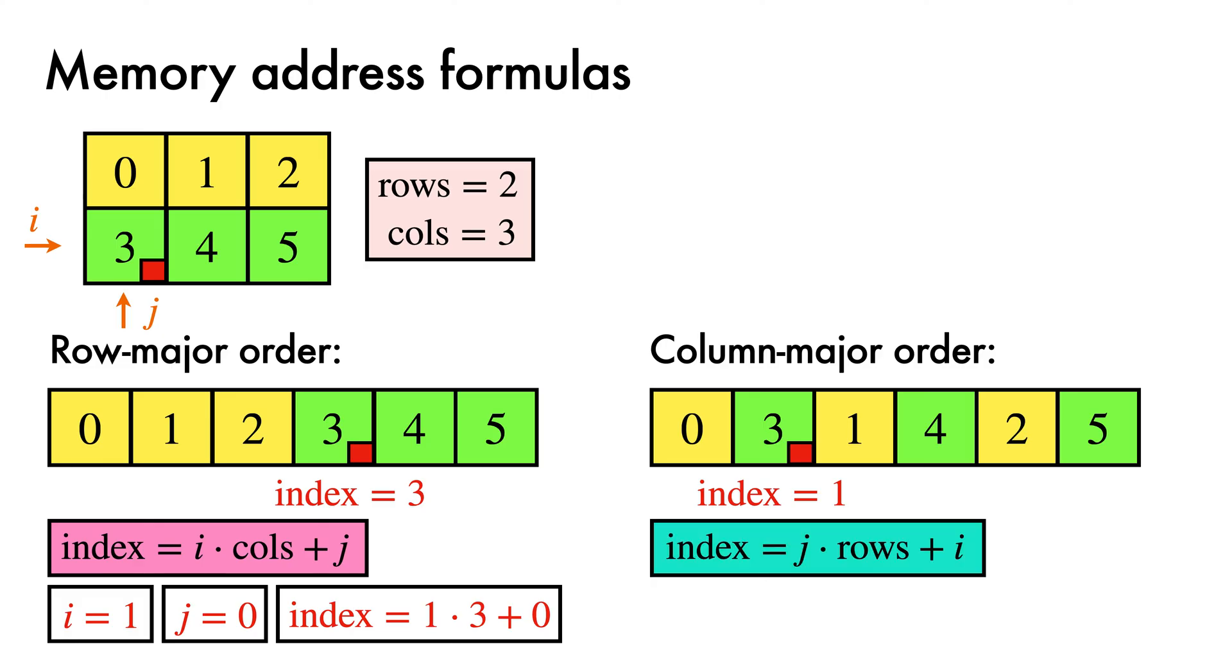To compute the column major index, we flip the formula. It's j times the number of rows plus i, to account for the fact that we are now traversing along the columns. We can repeat our calculation for our running example with i equals 1 and j equals 0, to see that the storage index is now 0 times 2 plus 1, which equals 1.